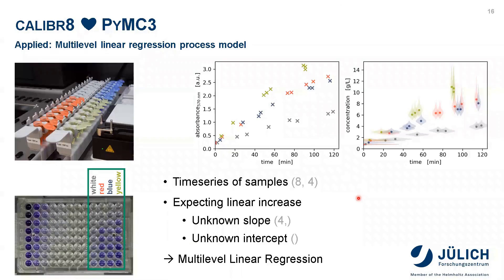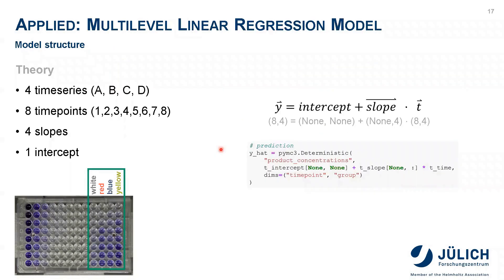In our application example, we have four time series of eight samples each. We expect a linear increase with unknown product formation rate or slope and an unknown intercept, which is common for all of these four. This is a multilevel linear regression problem that can easily be modeled with PyMC3. For this application example, the multilevel linear regression can be implemented as a single PyMC3 deterministic variable. It is simply the sum of intercept with slope times time point. By providing the dimension names, we do not only specify the shape, but also make sure that the inference data will be easier to work with. So now, let's jump into the code.